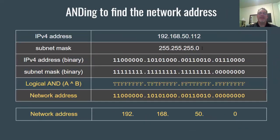The next topic is ANDing to find the network address. You can take an IP address and AND it with the subnet mask to find the network address. Your PC does this automatically — it combines your IP address with your subnet mask to determine which network it's on and builds its local routing table accordingly. Routers also use network addresses combined with subnet masks in their routing tables to forward packets to the correct destination.